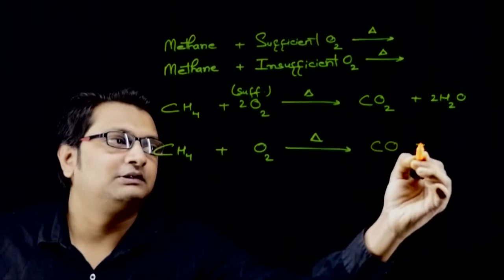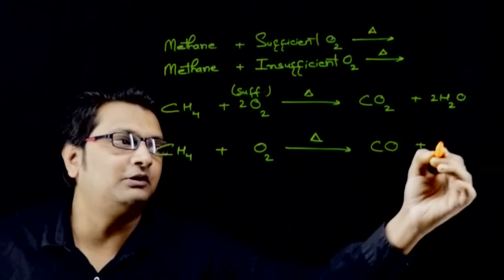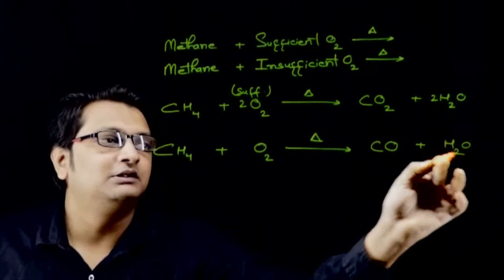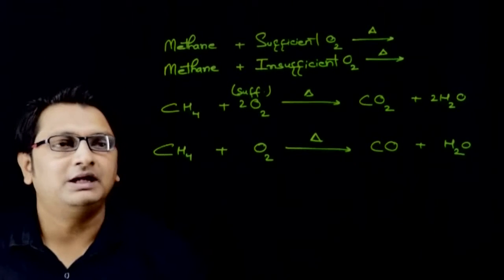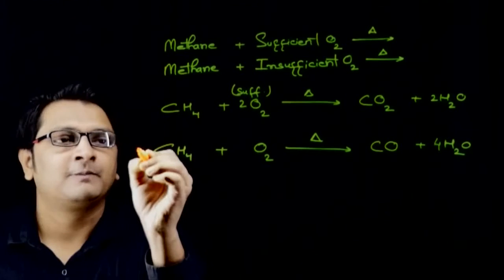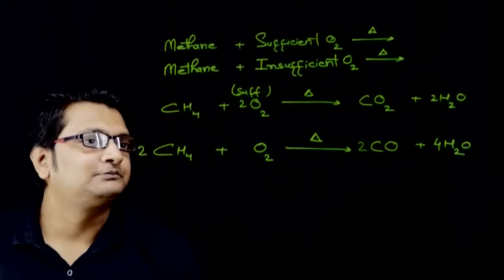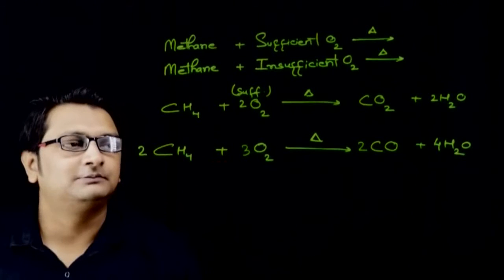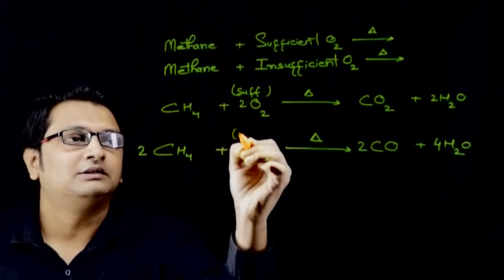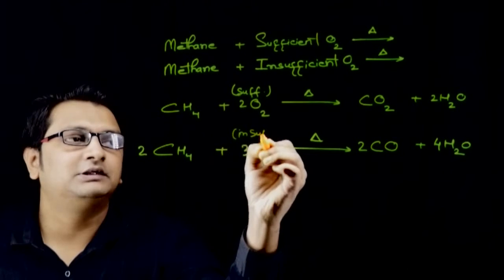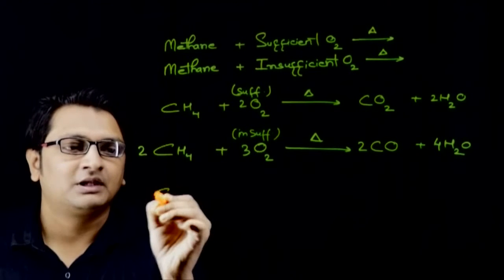Now, when methane reacts with oxygen or methane is burnt in insufficient or less amount of oxygen, poisonous carbon monoxide or harmful carbon monoxide gas is formed along with water vapour due to high temperature again. To balance this reaction, I will put four here and two here and two here and three here and the reaction is balanced. Now, this was insufficient or little amount of oxygen.